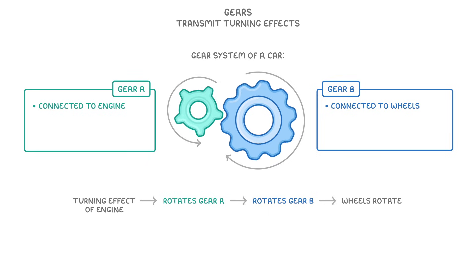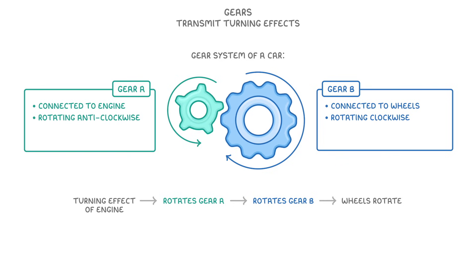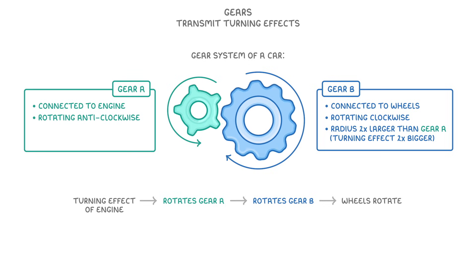Now there are two important things to notice about this. One is that the gears turn in opposite directions. So here we can see that gear A is rotating anti-clockwise, but gear B is rotating clockwise. The other is that the gears are different sizes, or to be more precise, the radius of gear B is two times larger than that of gear A. And importantly, this will mean that the turning effect of gear B is also two times bigger than the turning effect of gear A. So the turning effect of the engine has been doubled as it's passed to the wheels.